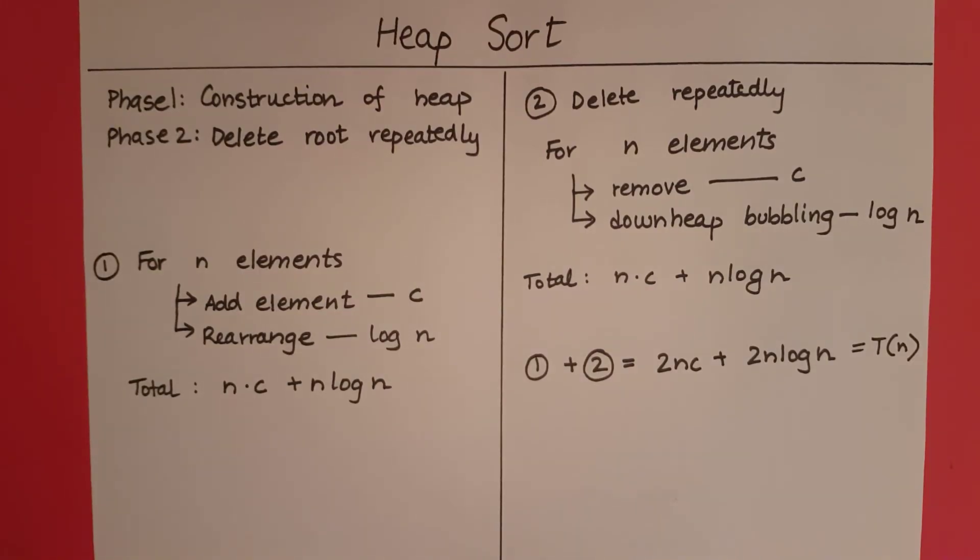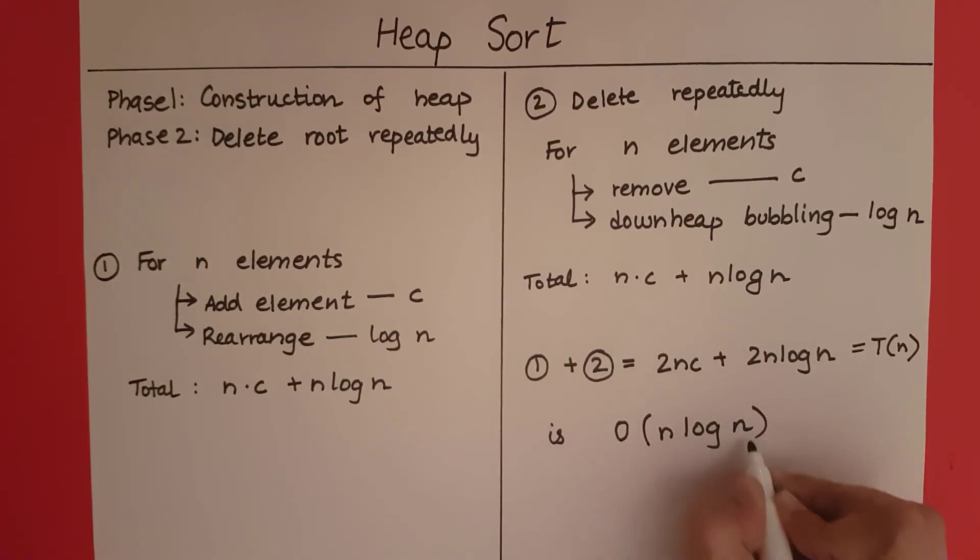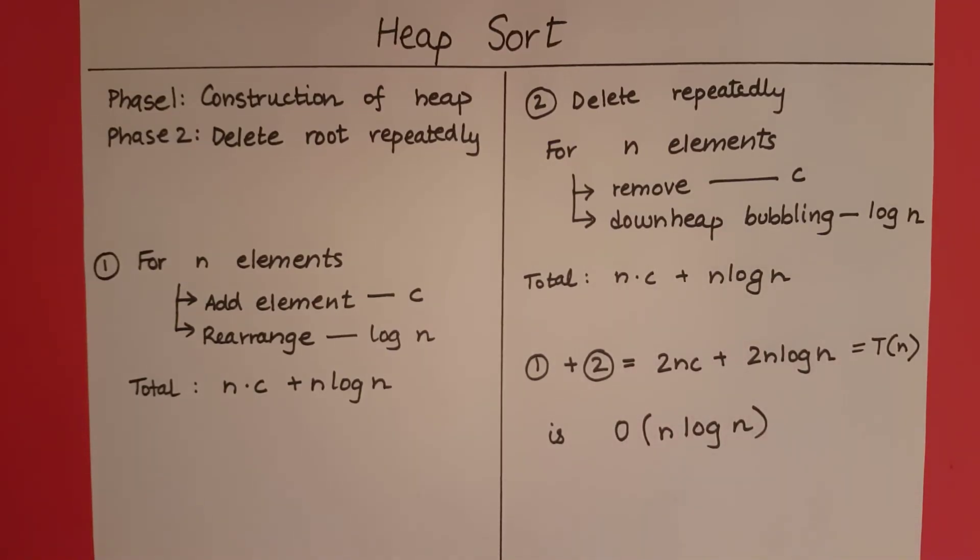So now to find the big O of this we need to find the dominant term. n log n dominates over just n, so this is going to be big O of n log n. Why are we not taking into consideration 2 or c? Because we ignore the constants when we are trying to find big O. So this is how you identify the big O notation of heap sort: n log n.